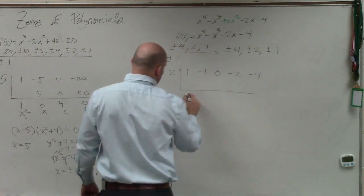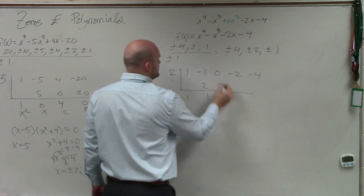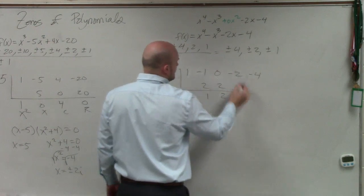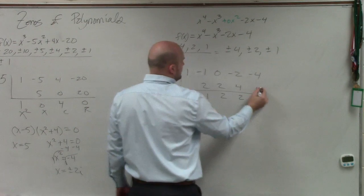Now, we bring down the 1. 1 times 2 is 2, 1, 2, 2, 4, 2, 4, 0.